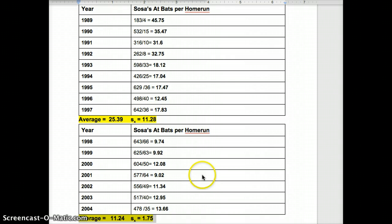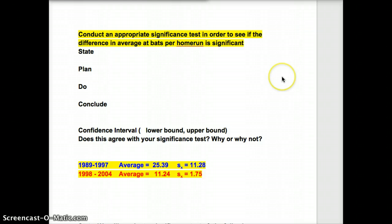This one's going to go into L1. This one's going to go into L2. You can try this test with data as well as statistics. I also have the averages down here, approximate averages. Just looking at the data, you can see we have some very big numbers up here. Much smaller numbers down here, in the years in question. 98 was that season when McGuire and Sosa were racing for it. Let's see what a significance test would look like for this. I'd like you to conduct an appropriate significance test in order to see if the difference in average at-bats per home run is, in fact, significant. We're going to use the same strategy of state, plan, do, and conclude, and then a confidence interval.